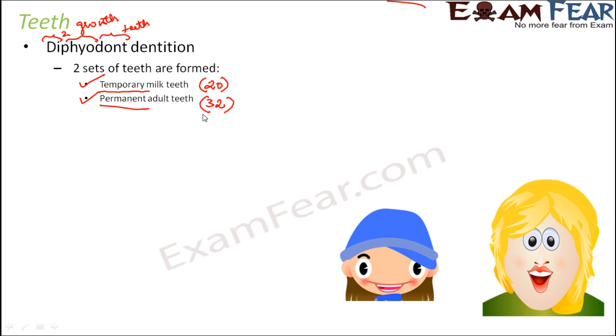This type of dentition where in a lifetime you get one set of teeth, then those teeth go off and are replaced by another set of teeth, is called diphyodont dentition.